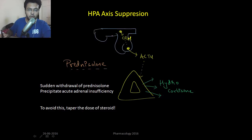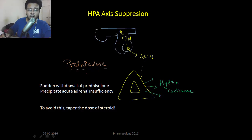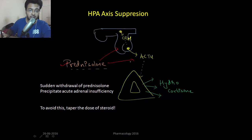Let's switch to endocrine pharmacology. Normally, the hypothalamus releases corticotropin releasing hormone, which stimulates the anterior pituitary to release ACTH. This ACTH stimulates the adrenal gland to release various steroids, one of them being hydrocortisone. If you give a patient exogenous steroids like prednisolone, this will create a negative feedback in the HPA axis — the hypothalamus-pituitary-adrenal axis.